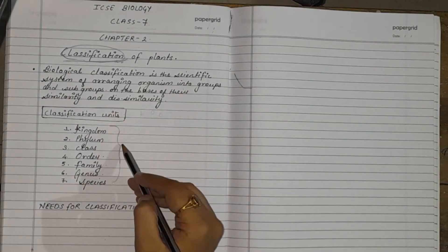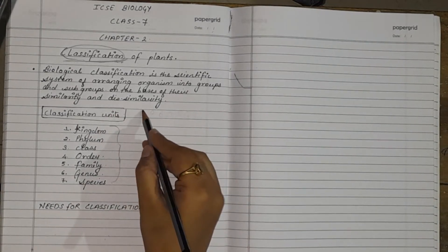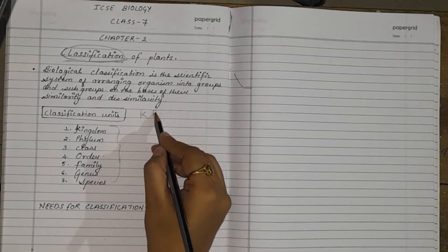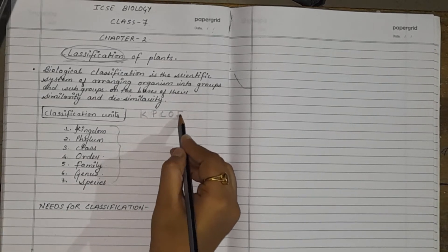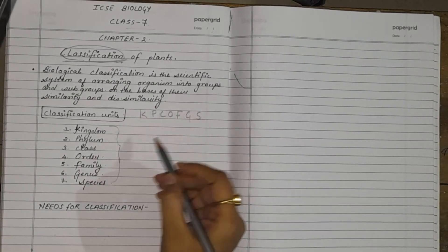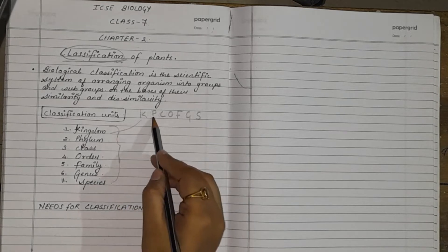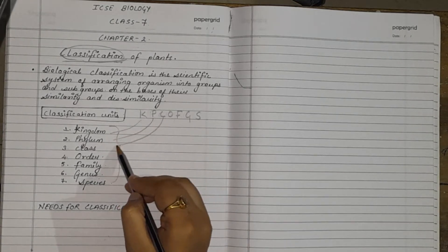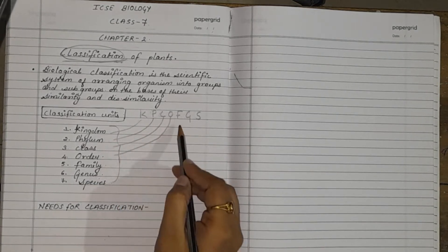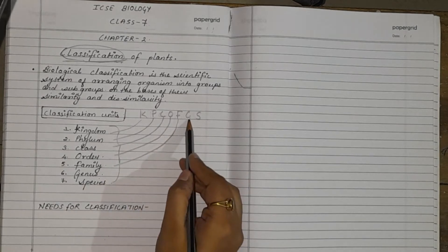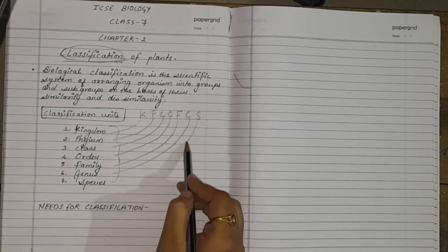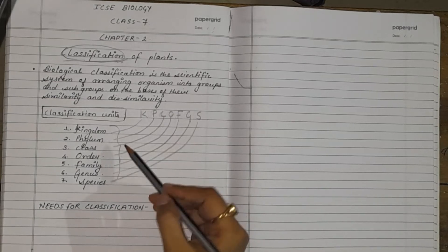For remembering classification units we can write it as K, P, C, O, F, G and S. Here K stands for kingdom, P for phylum, C for class, O for order, F for family, G for genus, S for species.